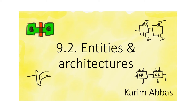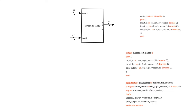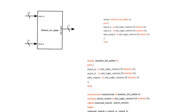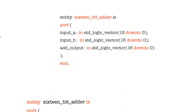A VHDL design consists of at least two parts: an entity and an architecture. So a VHDL design consists of at least one entity and one architecture. First of all, let's begin with the entity.